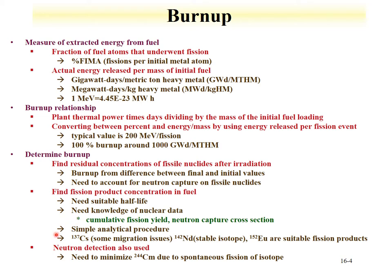Certain isotopes — cesium-137, neodymium-142, and europium-152 — are often used as fission products to determine burn-up. One can also look at neutron detection to determine burn-up, but it is necessary to minimize the influence of curium-244 because it has spontaneous fission, so a route to measure the amount of curium-244 in the material is needed.